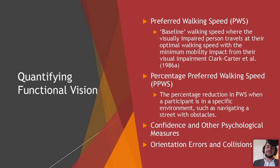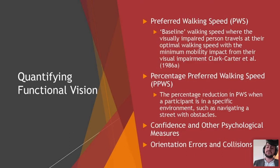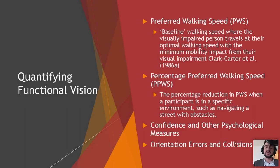Moving on to functional vision, which is slightly more abstract and a lot more difficult to measure — and that makes it challenging for us as navigation and civil engineers. This is where we take visual function and quantify it into how a person actually behaves on a day-to-day basis. We can use preferred walking speed (PWS), which is the person's optimal walking speed in any given environment, and percentage preferred walking speed (PPWS), the reduction in walking speed based on a suboptimal environment. We can also look at confidence and other psychological factors, orientation errors, and path inefficiencies.